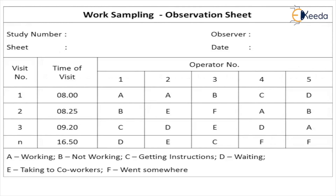This is the observation sheet, where A, B, C, D, E, F indicate the activity: A is working, B is not working, C is getting instructions, D is waiting, and there is also talking to co-workers when some work is not in progress. The visits are planned — 1, 2, 3 — and any number of visits or observations can be made within a specified time limit. For every visit, five operators' activity types are recorded on the observation sheet, along with the observer's name and the date of visit.